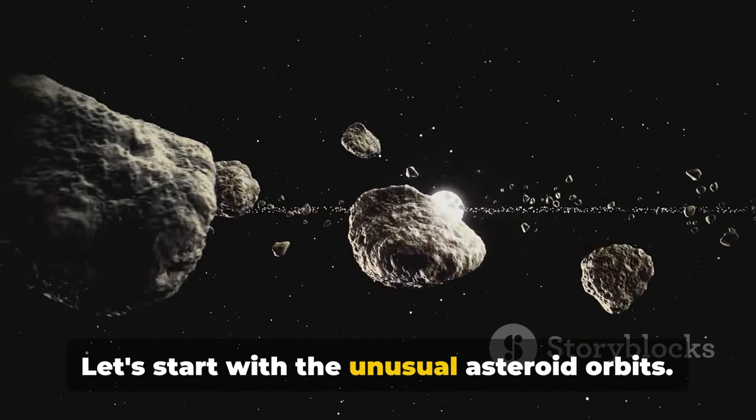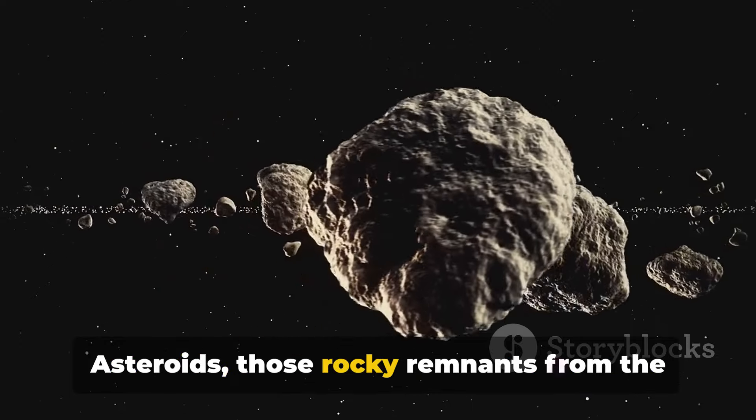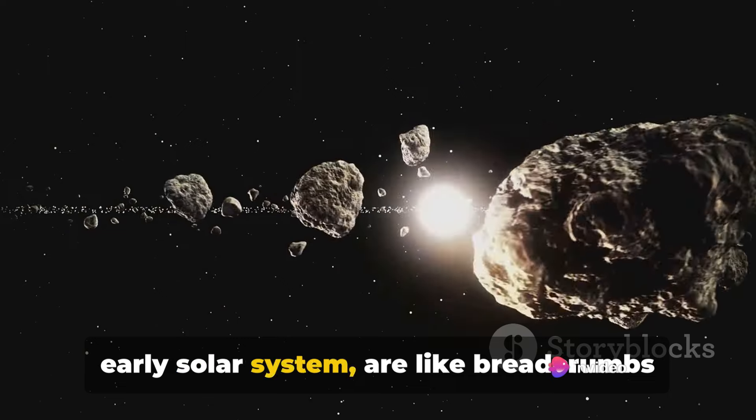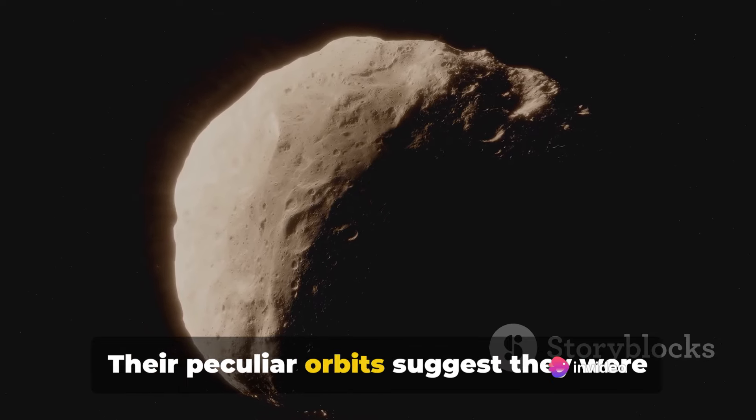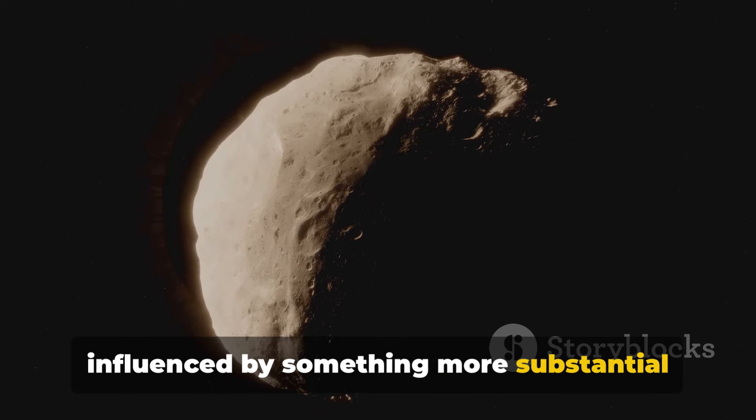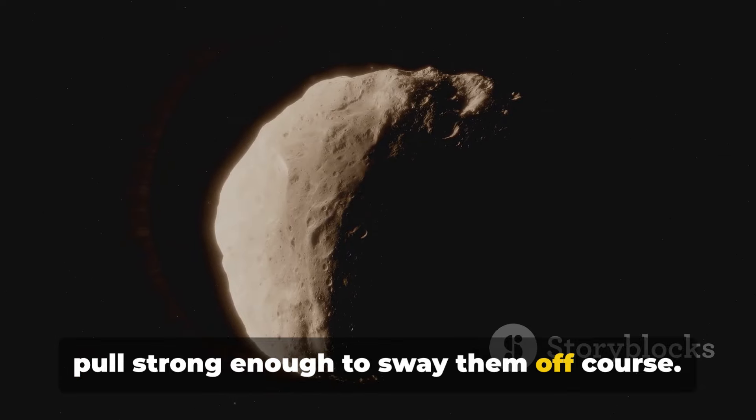Let's start with the unusual asteroid orbits. Asteroids, those rocky remnants from the early solar system, are like breadcrumbs leading us back in time. Their peculiar orbits suggest they were influenced by something more substantial than them, something with a gravitational pull strong enough to sway them off course.